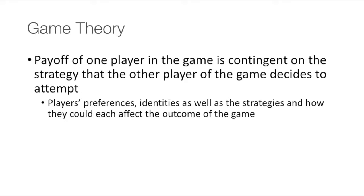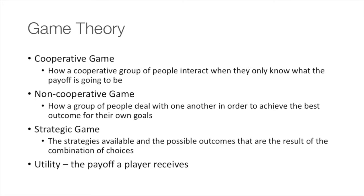and even computers. The key to game theory is that the payoff of one player is contingent on the strategies that the other player decides to attempt. The most common types of game theory are cooperative game and non-cooperative game. Cooperative game theory is about how a group of people interact when they only know what the payoff is going to be. Non-cooperative game theory involves how a group of people deal with one another in order to achieve the best outcome for their own goals.